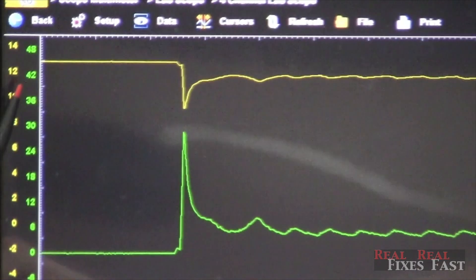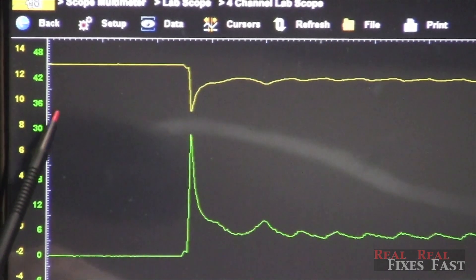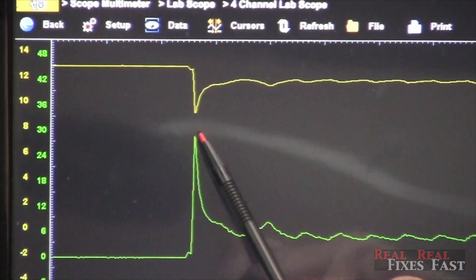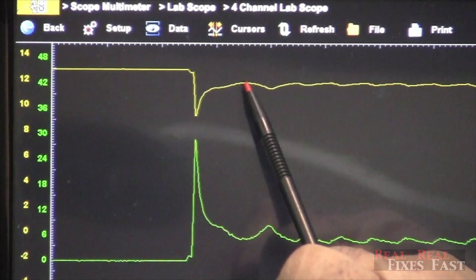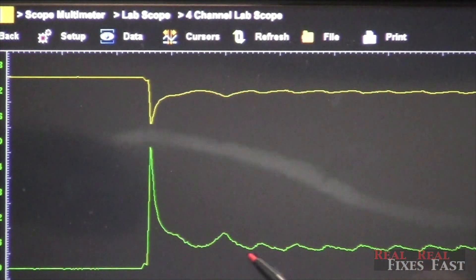So you can see our voltage drop. We started at 12, we came down to about nine volts or so. Now what you're looking for is to see this voltage drop should come up and start leveling off. And you can see little bitty voltage drops down there that correspond to the starter.